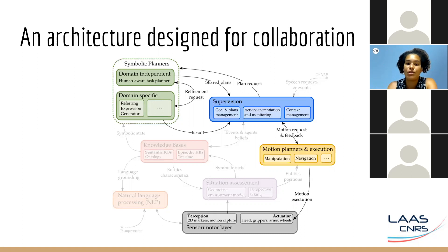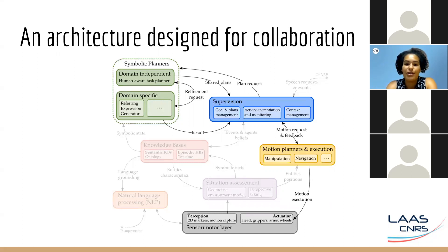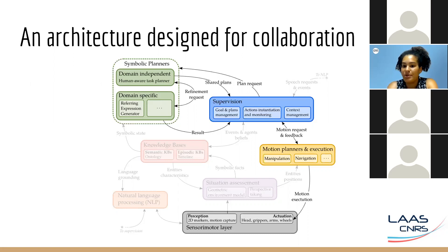Now let's talk about the lowest level of the architecture: the sensory-motor layer. It is connected to all the sensors and motors of the robot. When it receives a request of motion, the robot drivers are activated. On the perception part, we currently use 2D markers — kind of a QR code — to recognize objects, and motion capture to perceive the human. A person interacting with the robot has to put a helmet with reflective markers on their head and hand. This perception data is sent to the situation assessment component.